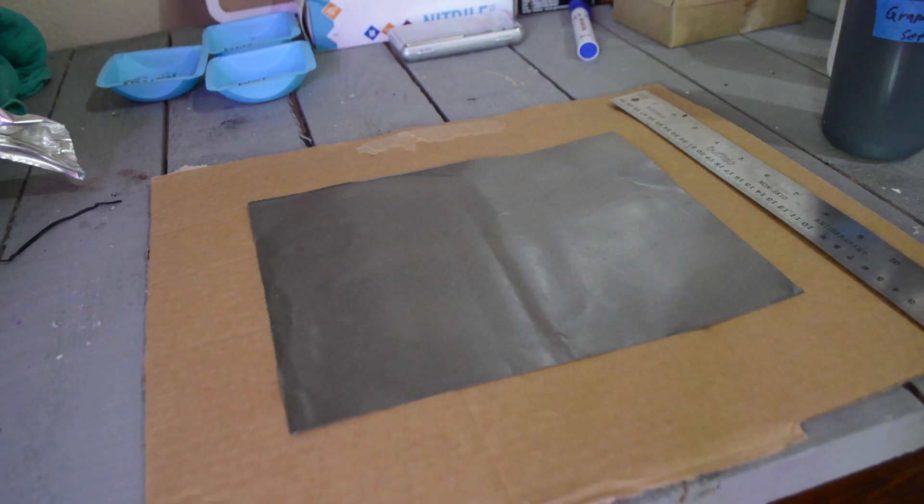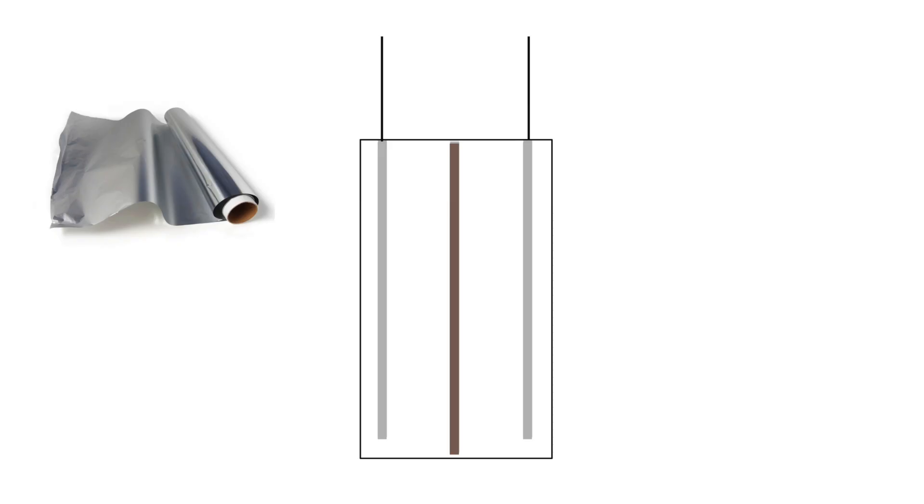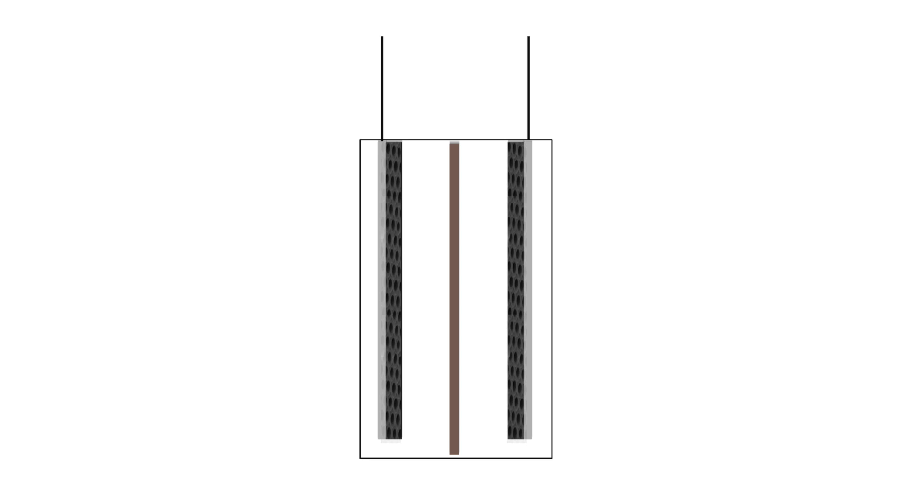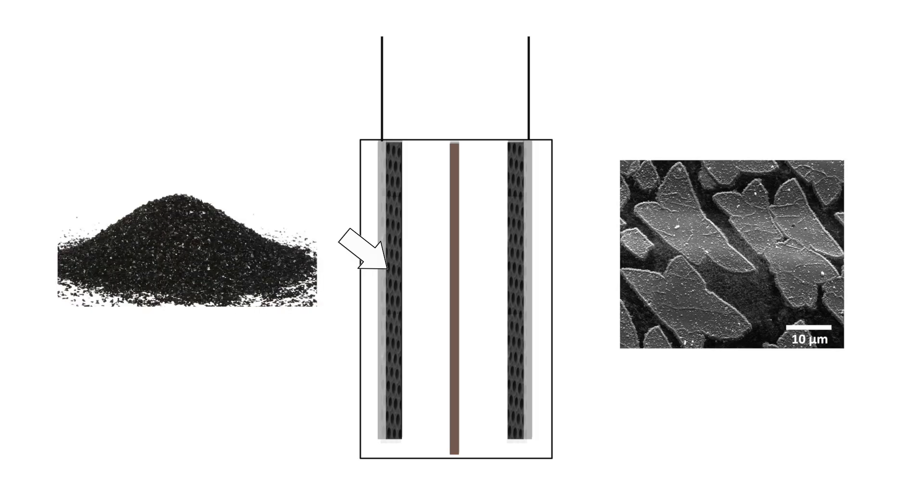To build one, you first need two current collectors, which are just conductive materials, usually foils, that allow you to get power in and out of the device. Then we have the two electrodes. Here's where things get weird. The first electrode is the material you coat the current collector in, usually an activated carbon or graphene or something similar. The second is actually the electrolyte.